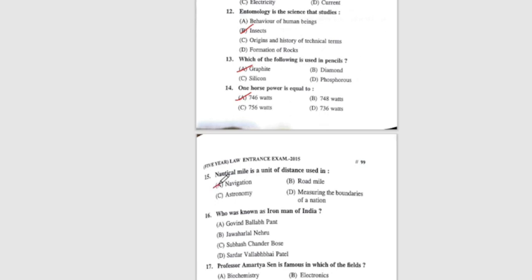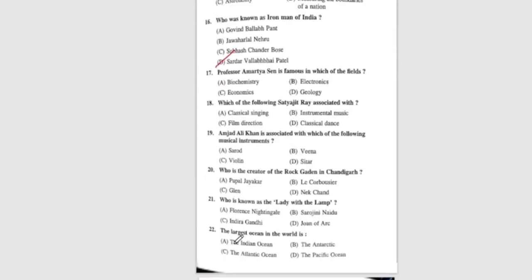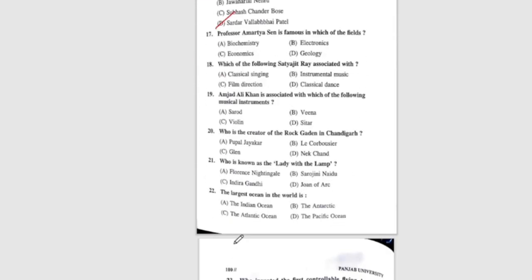Question 16: Who was known as the Iron Man of India? The correct answer is option B, Sardar Vallabhbhai Patel. Question 17: Professor Amartya Sen is famous in which of the fields? The correct answer is option C, economics.